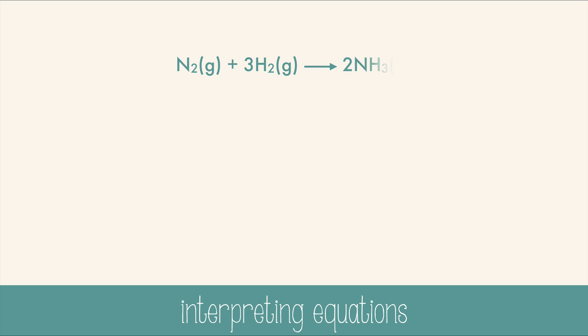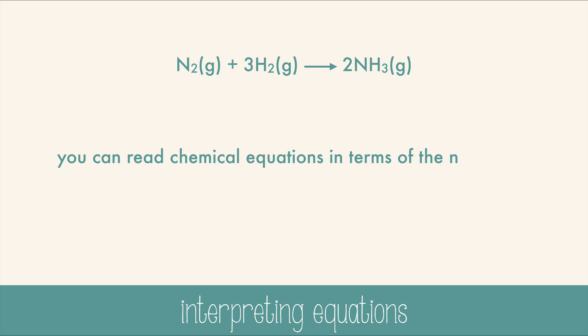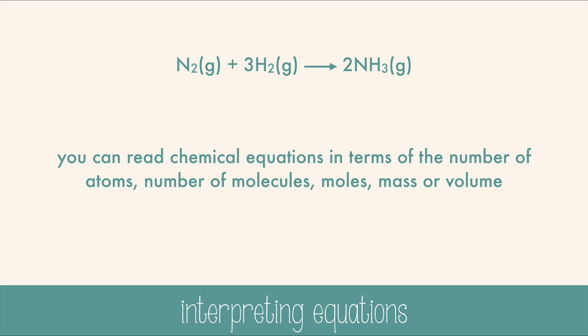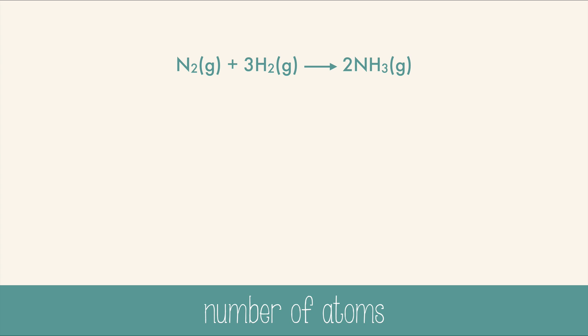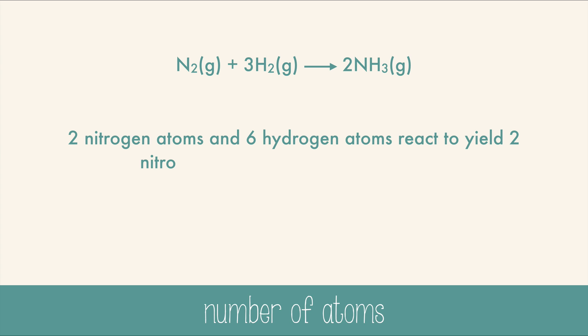When you read a chemical equation like this one, you can read it in terms of the number of atoms, number of molecules, moles, mass, or volume. Let's try interpreting this equation in each of those ways. In terms of atoms: two nitrogen atoms and six hydrogen atoms react to yield two nitrogen atoms and six hydrogen atoms.